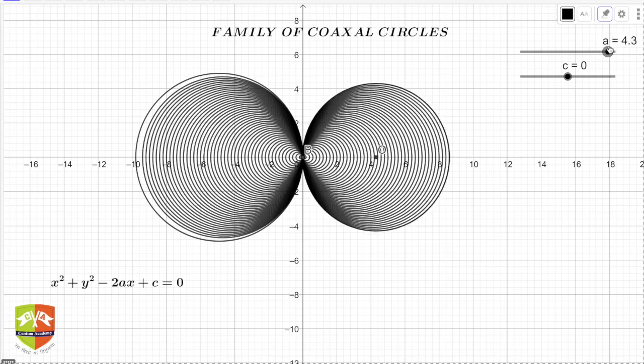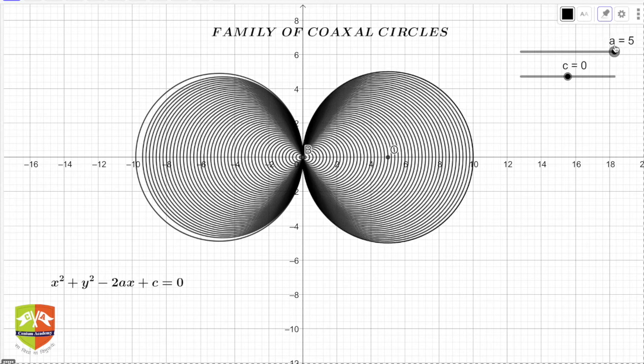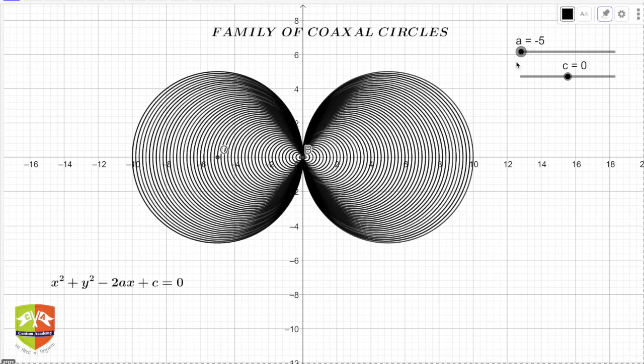When a is positive, these are the set of coaxial circles. So this is when c equals 0, all the circles are tangential to the y-axis and the center lies on the x-axis.